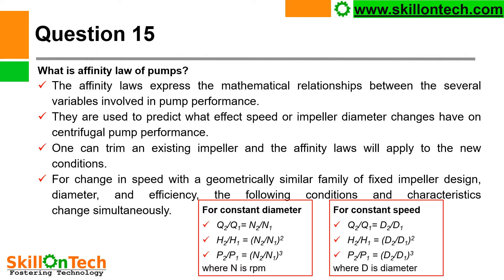For constant diameter: Q2/Q1 = N2/N1; H2/H1 = (N2/N1)²; P2/P1 = (N2/N1)³, where N is RPM. For constant speed: Q2/Q1 = D2/D1; H2/H1 = (D2/D1)²; P2/P1 = (D2/D1)³, where D is the diameter of the pump impeller. These are the important affinity laws of pumps.